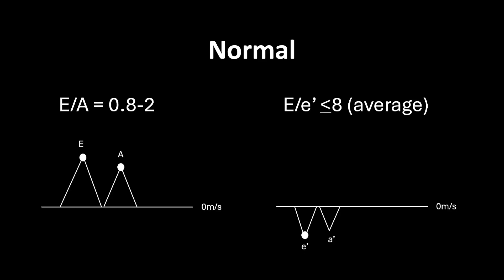This slide serves as a reference for normal values. To calculate E over E-prime, take the average of both the septal and lateral E-prime values, then calculate the ratio between E and the average E-prime. Normal values should be less than or equal to 8.